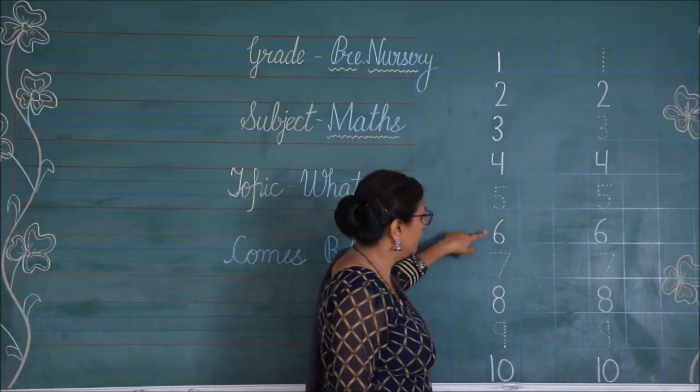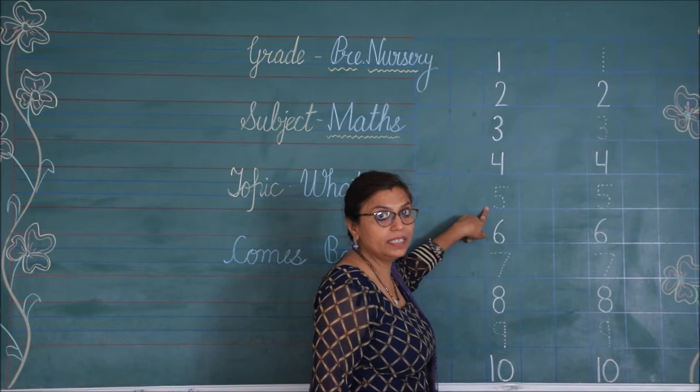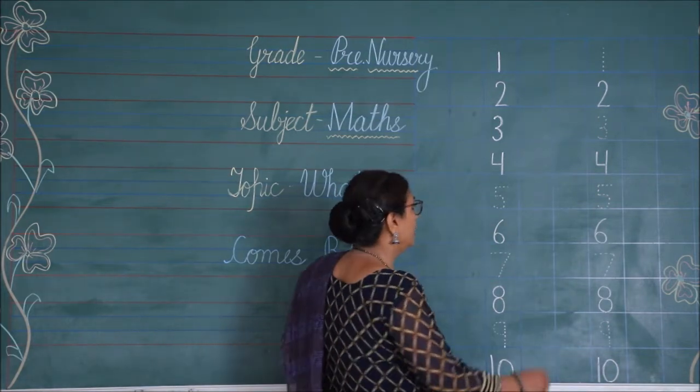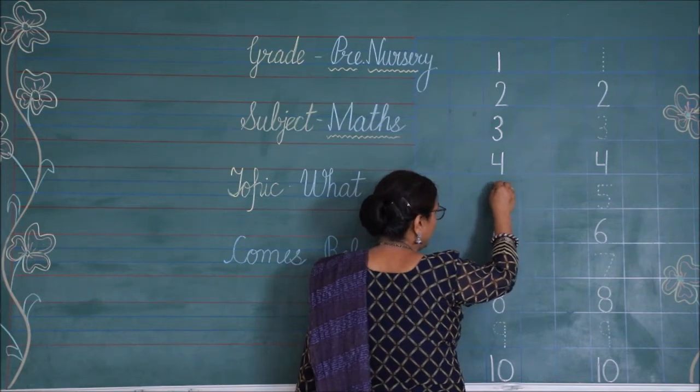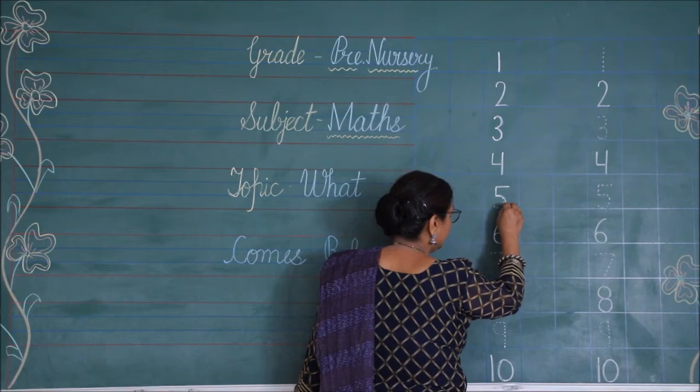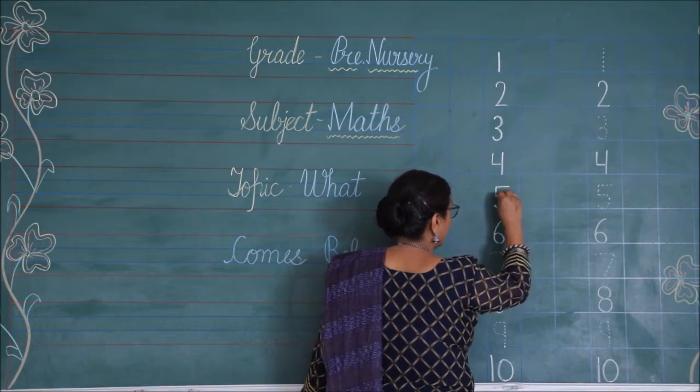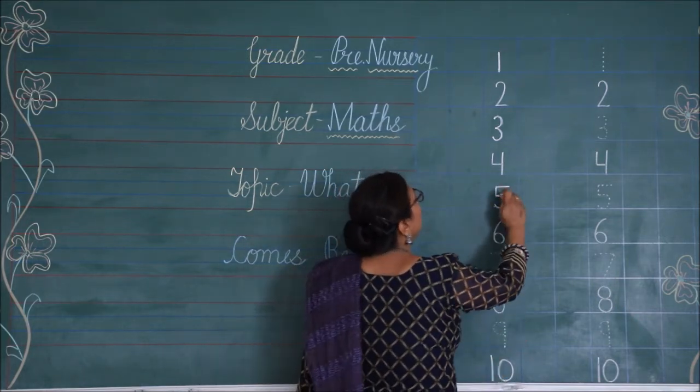5 is missing. Number 6. Before, which number will come before 6? It is number 5. So, 6 se pehle aane wala number aapka 5 hai. Now, you will join the dots to write the number 5. To write the number 5, make a half curve, right curve, and write like this. This is number 5.